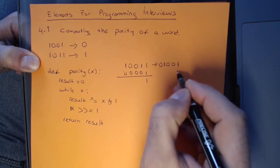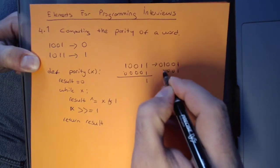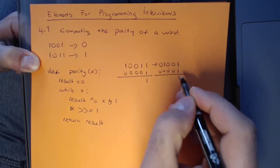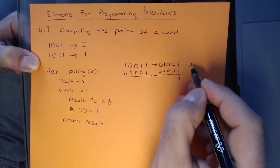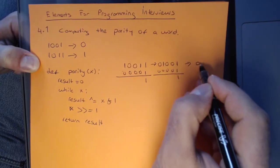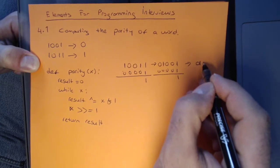And then we're going to do the same thing again, AND it with 1. And then we're going to right-shift one more time, and that's going to become 0100.